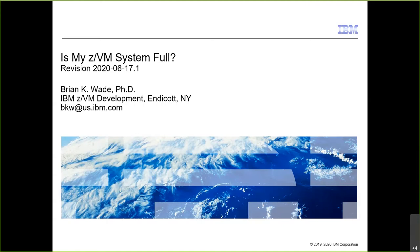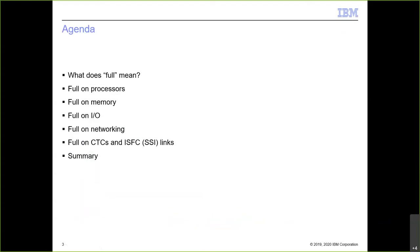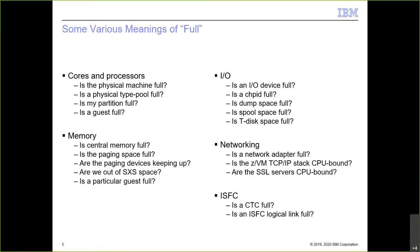That's how this presentation came together. It's been given a couple of times since then. The agenda covers what 'full' means, divided into different physical resource categories: processors, memory, networking, and the links connecting SSI members — the resource axes. The performance toolkit will be used throughout to illustrate how to inspect each resource.